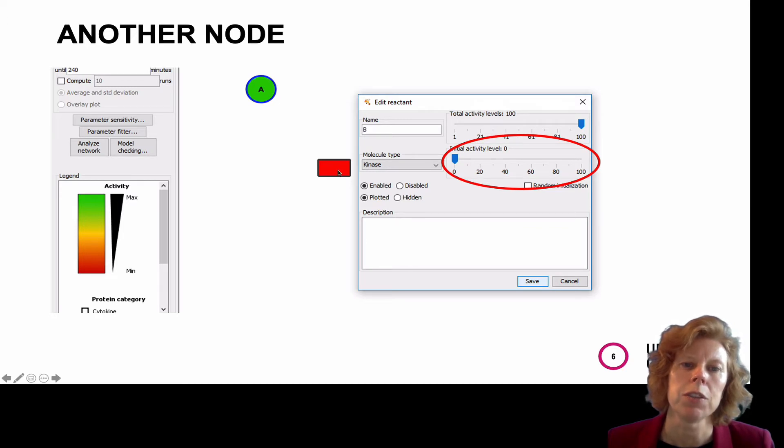And you can set the initial activity. So for B, we set that at zero. For A, we put that at 100. You can see that by this color scheme.